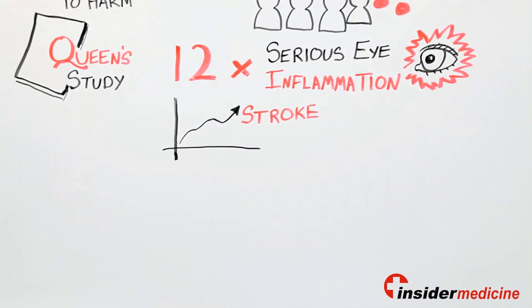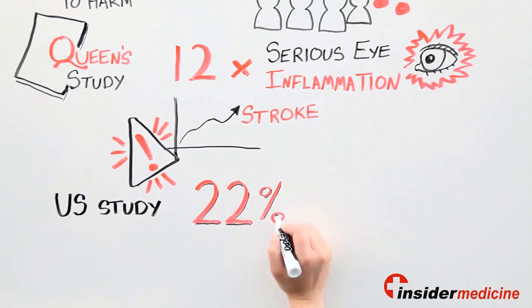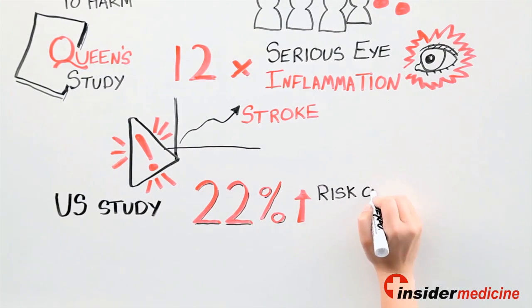In our study, this was not statistically significant, but this warning sign was also noted in a larger study of over 40,000 patients in the U.S., which showed a 22% higher risk of stroke for those using Avastin. These are significant results.